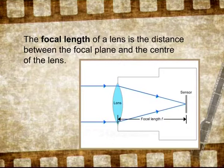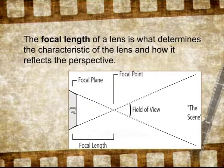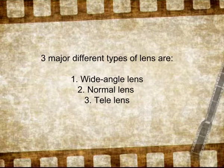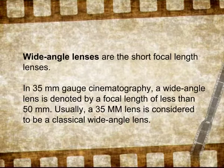The wide range of lenses available to us are classified according to their focal length. The focal length of a lens is defined as the distance between the focal plane and the centre of the lens. The focal plane is the plane on which the image is formed, and the focal length determines the characteristic of the lens and how it reflects perspective. The three major types are the wide-angle lens, the normal lens, and the telephoto lens. In 35mm gauge cinematography, a wide-angle lens has a focal length of less than 50mm — usually 35mm is considered a classical wide-angle lens.